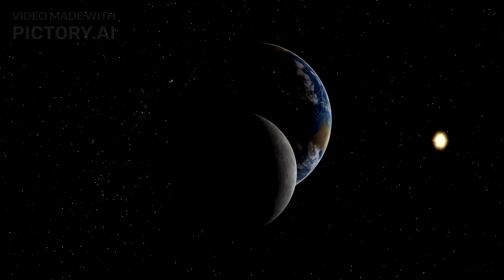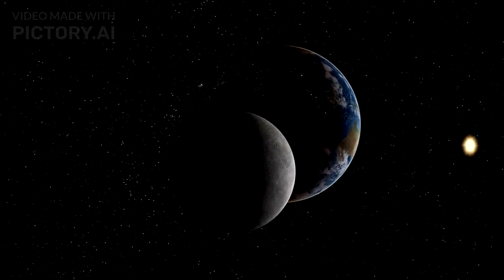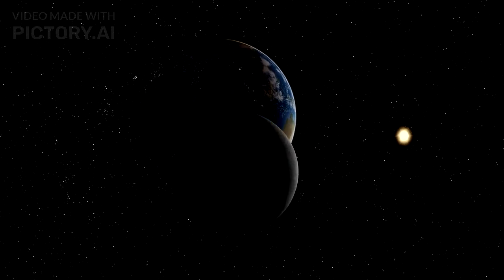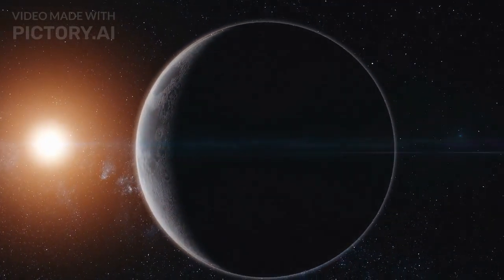In reality, the far side of the moon, often mistakenly called the dark side, isn't shrouded in eternal darkness. In fact, it gets plenty of sunlight just like the near side.